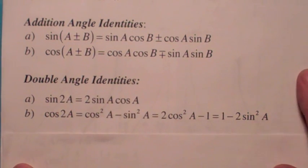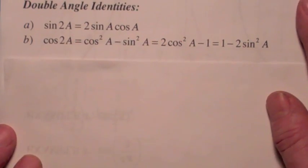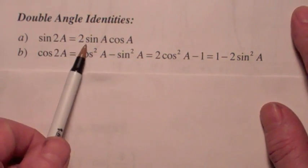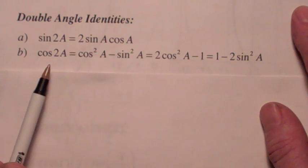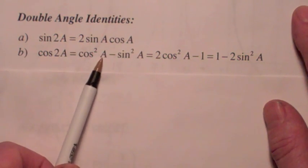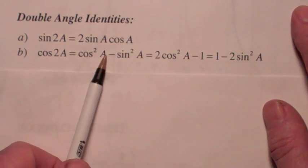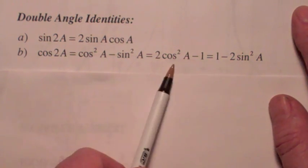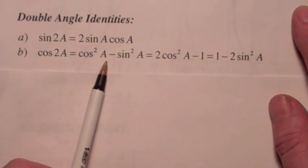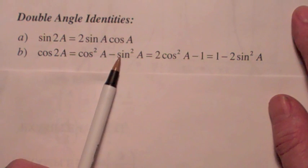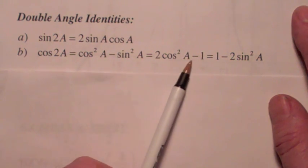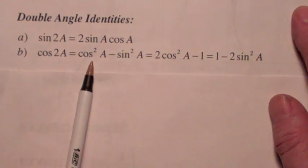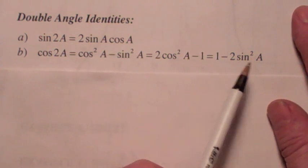The double angle identities: the sine of twice an angle is two times sine a cosine a. The cosine of twice an angle is cosine squared a minus sine squared a. Remember how to get the other two from the first one? You can replace sine squared with one minus cosine squared to get one version, and replace cosine squared with one minus sine squared to get the other.